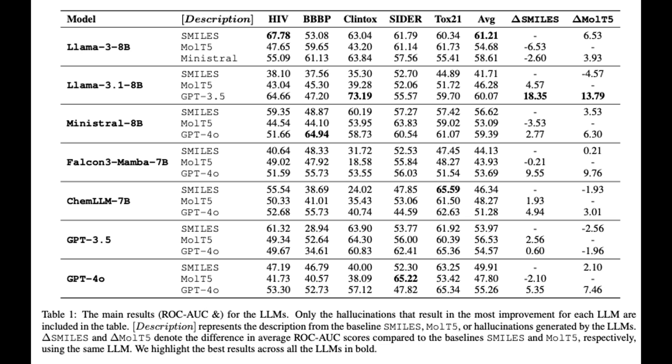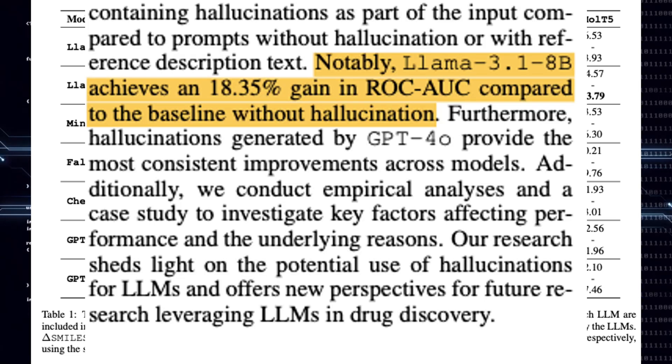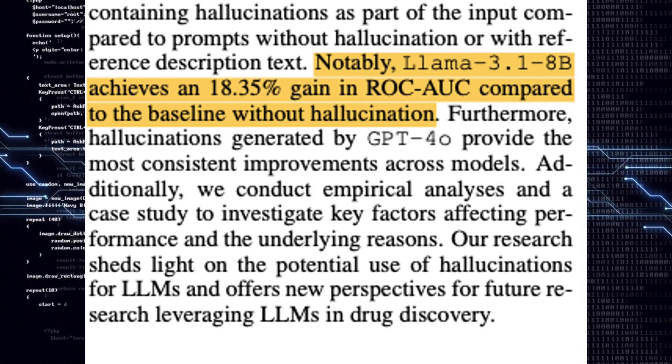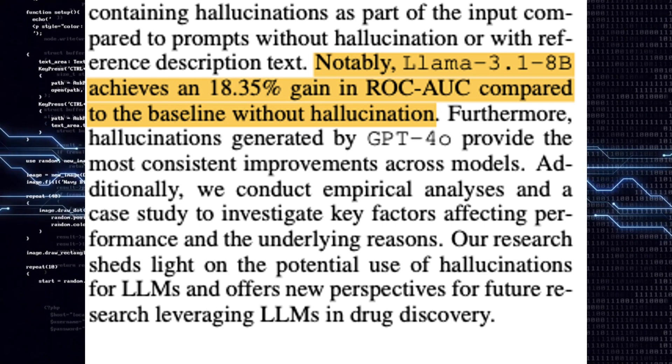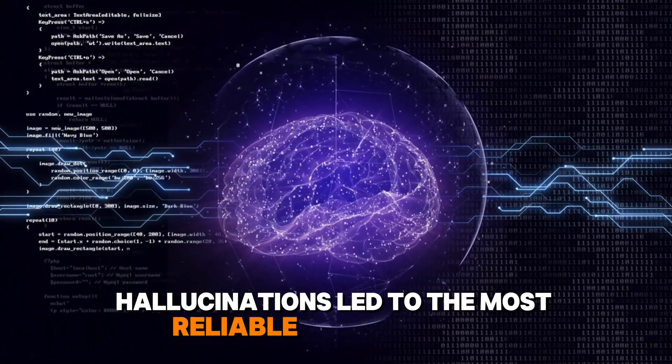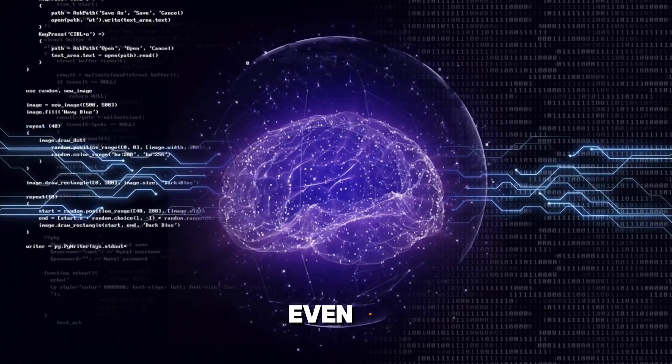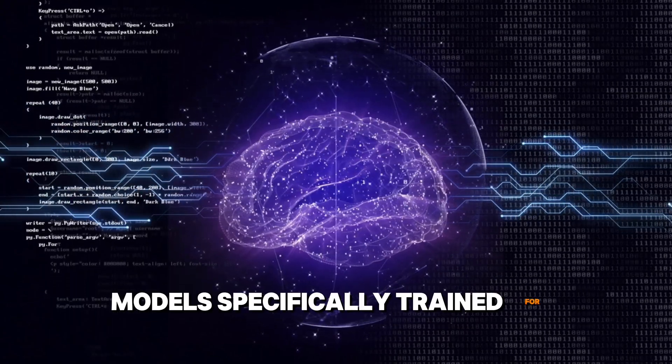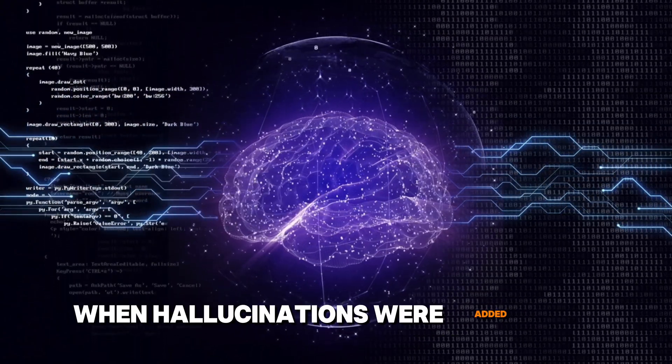Key takeaways. Llama 3.1 8B improved by 18.35% in predicting drug properties. GPT-40's hallucinations led to the most reliable improvements. Even AI models specifically trained for chemistry got a boost when hallucinations were added.